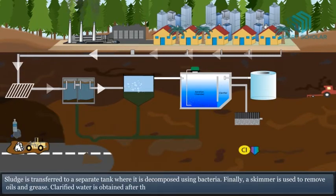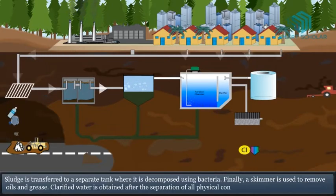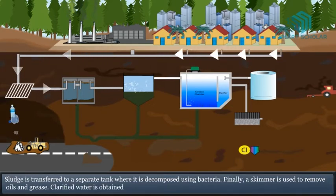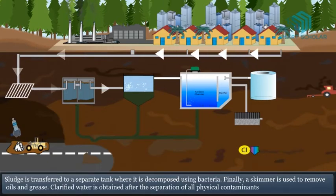Finally, a skimmer is used to remove oils and grease. Clarified water is obtained after the separation of all physical contaminants from the sewage.